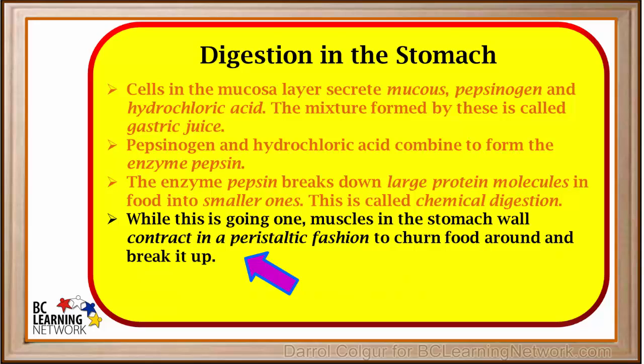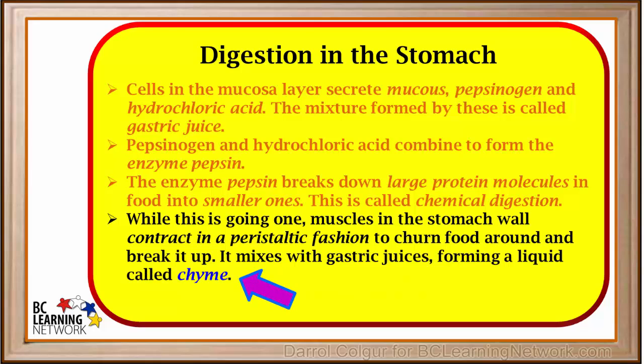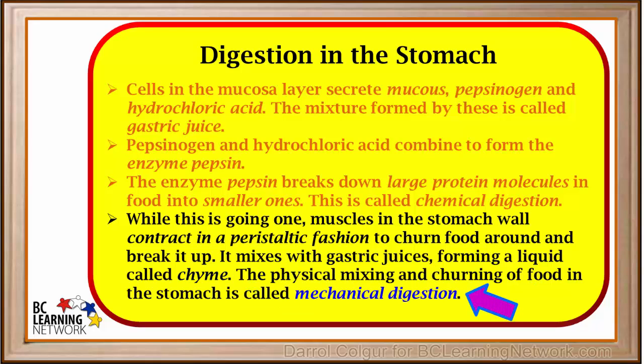While this is going on, muscles in the stomach wall contract in a peristaltic fashion to turn food around and break it up. The food mixes with gastric juices, and the combination of churning and chemical breakdown of proteins forms a liquid called chyme. The physical mixing and churning of food in the stomach is called mechanical digestion.